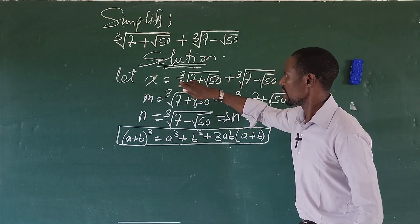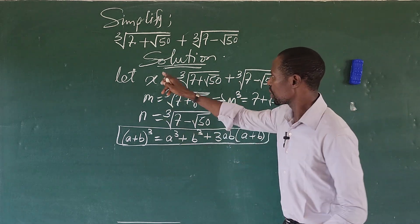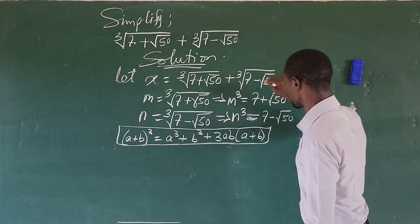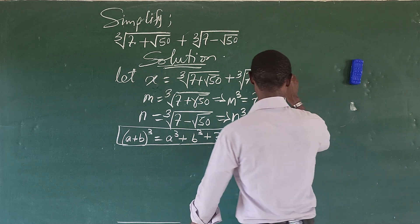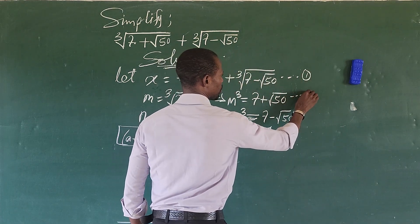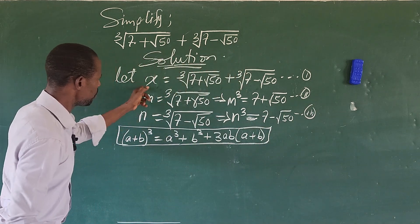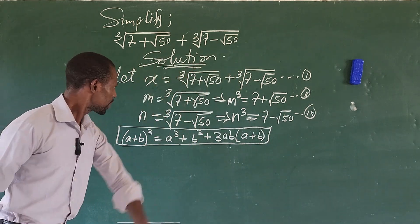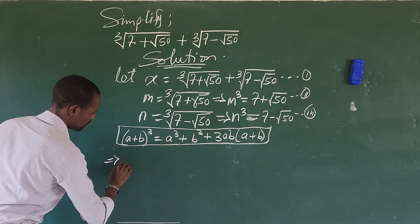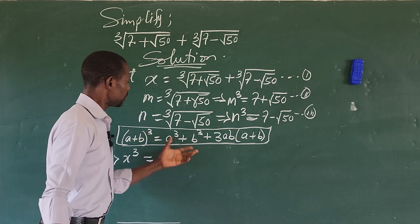From the expression x = m + n, we want to eliminate the radical, so we cube both sides of the equation. Cubing equation one gives us x³ equals the cube of (m + n), which we expand using the identity.